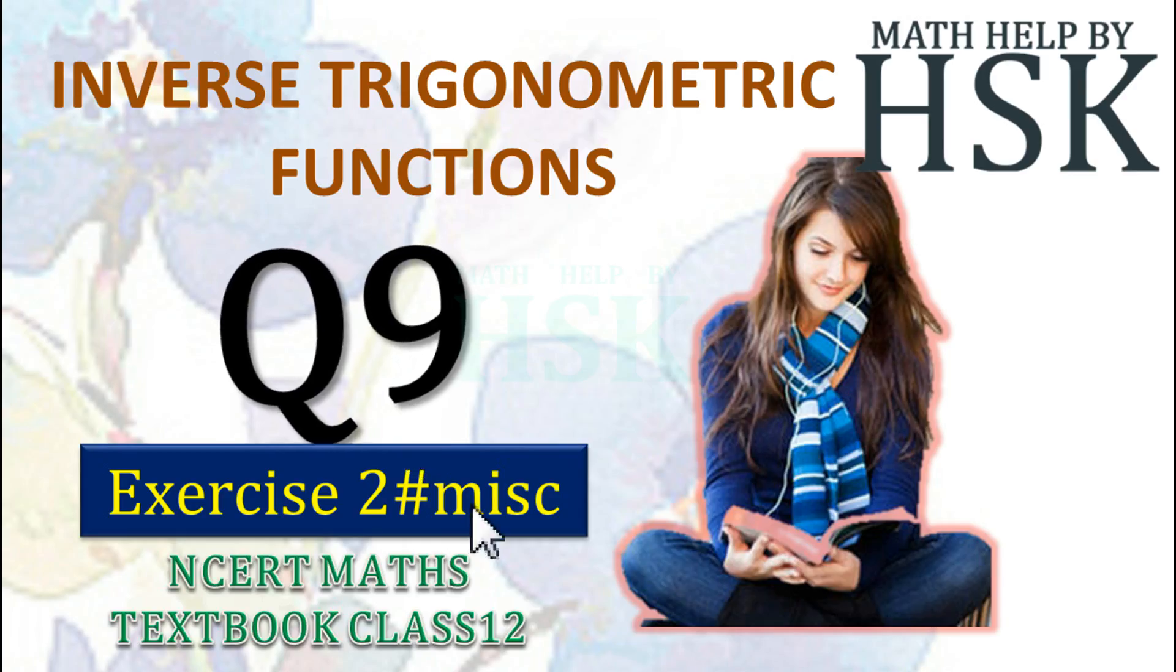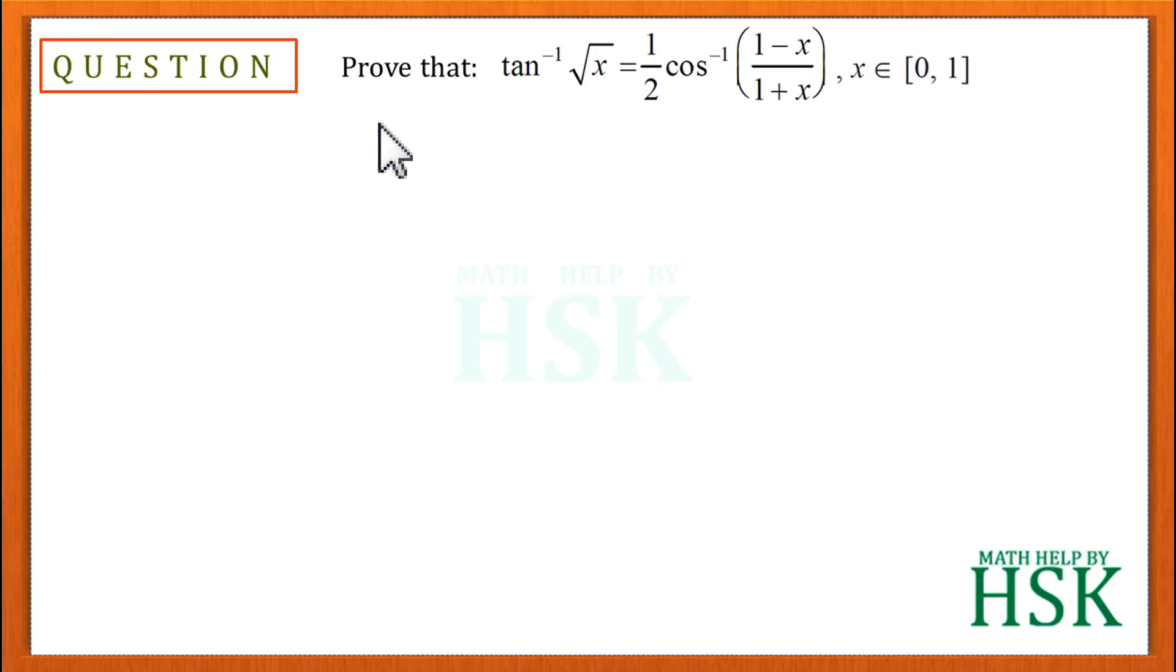Taking question number 9 of miscellaneous exercise of chapter 2, inverse trigonometric functions. The question is: prove that tan inverse of root x is equal to 1/2 times cos inverse of (1 minus x) upon (1 plus x). Now to solve this question, since I cannot simplify tan inverse of root x